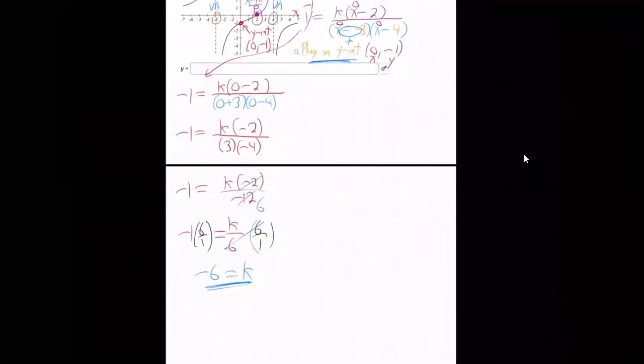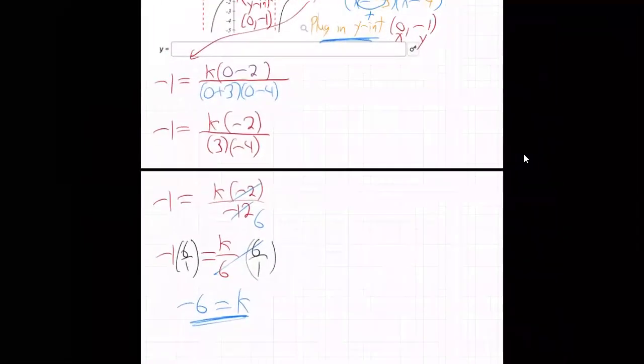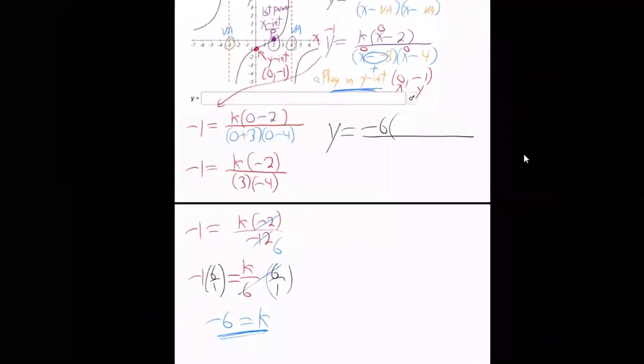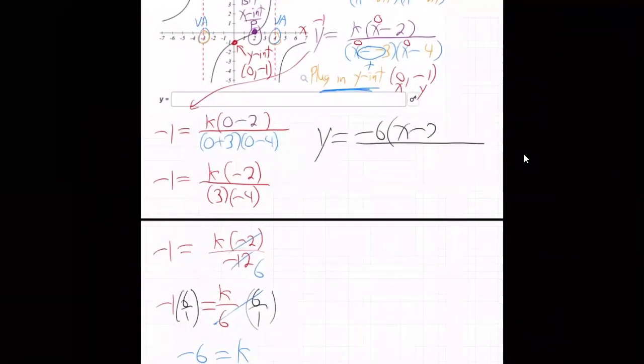So we solve for k there. So then the formula is y equals minus six times, what was the original equation? x minus two on the top, x plus three in the bottom, and x minus four. So there we go. Put a box around that. We got it.